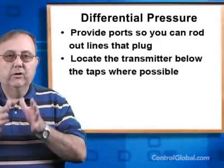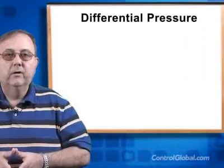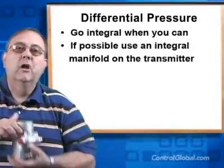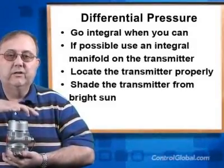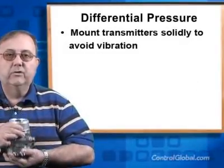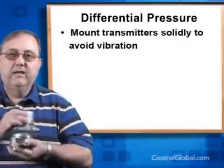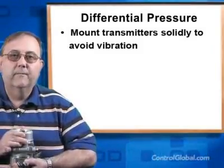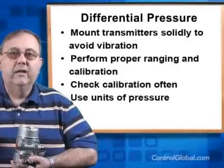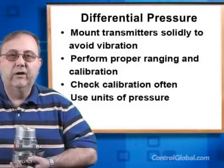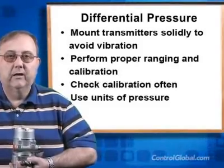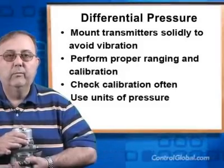For transmitters, there are some very simple installation guidelines too. Locate the transmitter where ambient conditions are close to normal. In outdoor installations, protect it from bright sun and from freezing or flooding. Transmitters need to be mounted to solid supports because vibration may damage them or cause accuracy shifts or errors. Calibrate the transmitter properly and zero the transmitter in the field. Use differential pressure units that clearly define a pressure, such as millibar or kilopascals — don't use inches of water column or millimeters of water column. And last, be sure to open the valve between the transmitter ports when zeroing the transmitter.